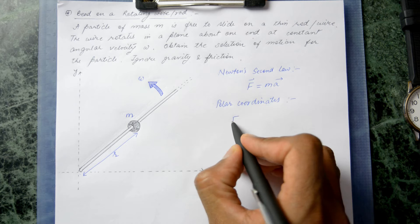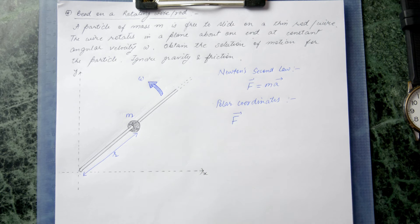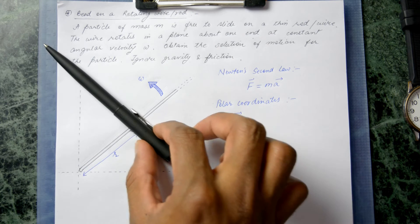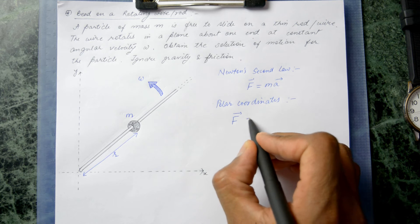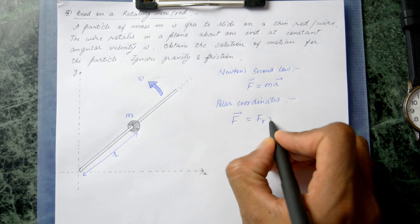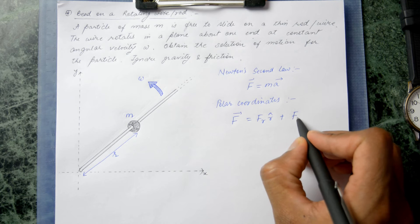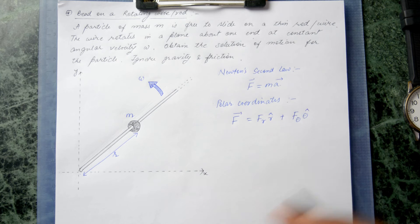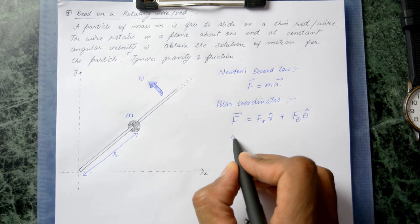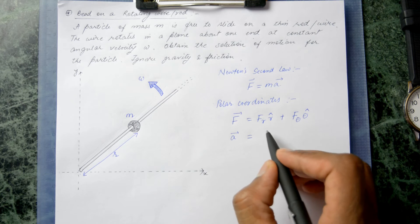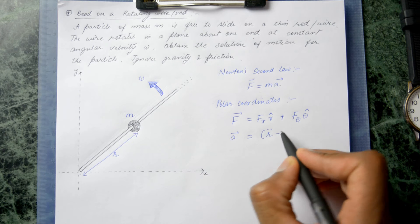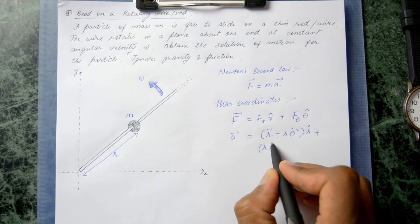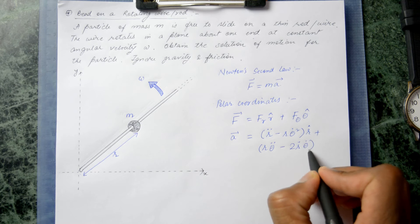In polar coordinates, the force can be written in terms of the radial direction and the angular direction. There are two directions: the radial direction along the wire, and the angular or tangential direction. The acceleration in polar coordinates is given by: A = (R̈ − Rθ̇²) R̂ + (Rθ̈ + 2Ṙθ̇) θ̂.